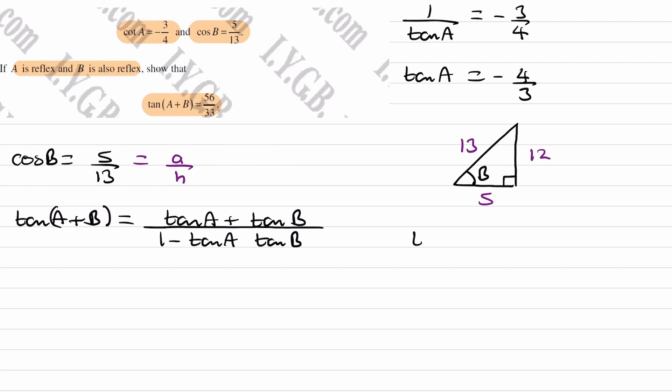Now tan B is equal to, using SOHCAHTOA again, opposite over adjacent. The opposite is 12, the adjacent is 5. But when using this method, the triangle doesn't tell you whether tan B will be positive or negative. So it could be either one, we're not sure right now.